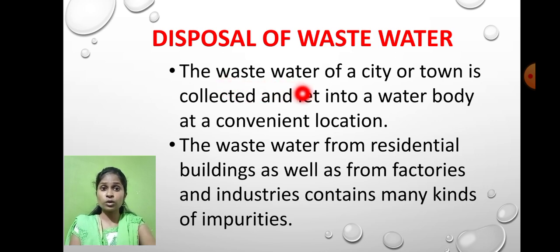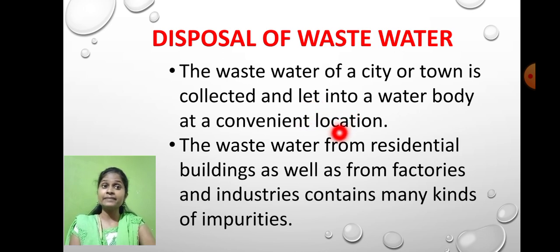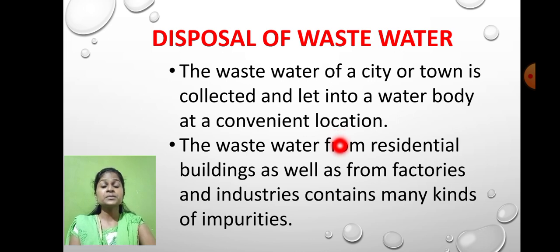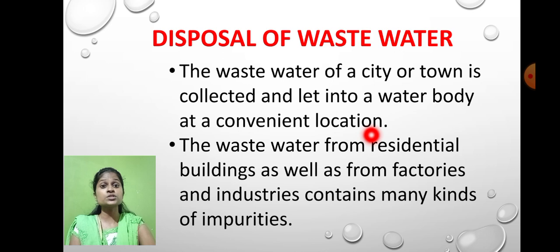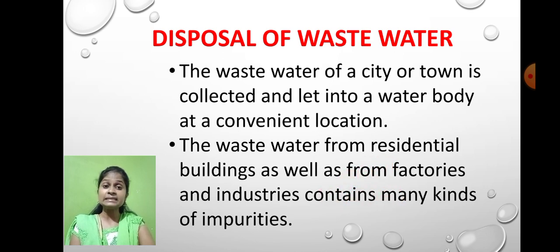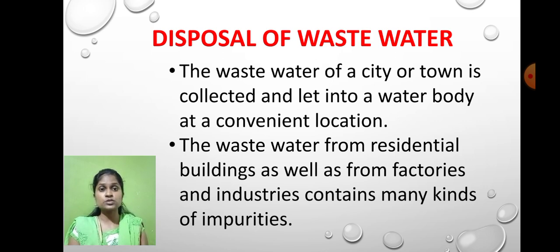The waste water of cities and towns is collected in sewage and let into water bodies at convenient locations. Waste water from residential buildings as well as from factories and industries contains many types of impurities. Not only home water — factory and industry water is also contaminated and has a lot of impurity.